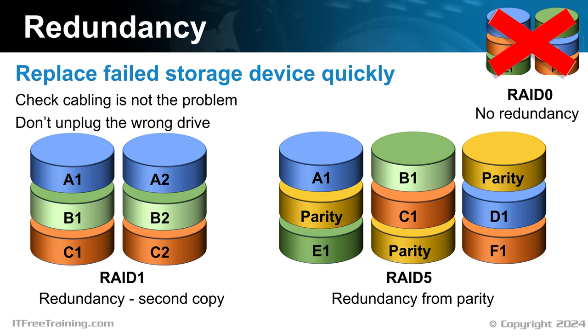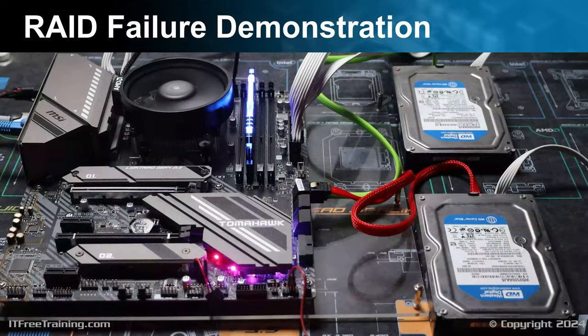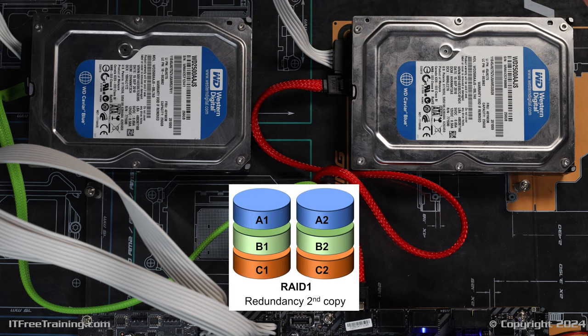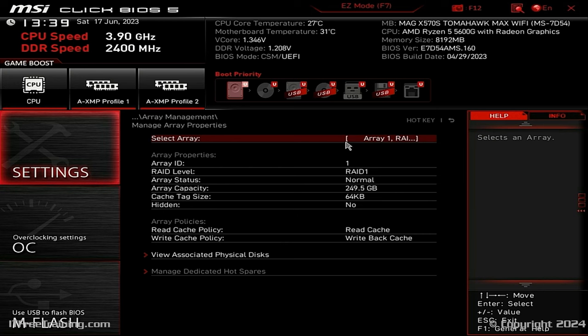Let's have a look at how to replace a storage device in a RAID system. For this demonstration, I have set up a computer with two hard disks configured as RAID 1, also called a mirror, because each drive contains identical copies of the data. This RAID is using motherboard RAID, not a dedicated RAID card. Dedicated RAID cards generally perform better, have more features, and may also have a better interface.